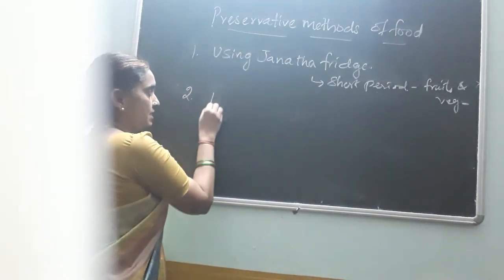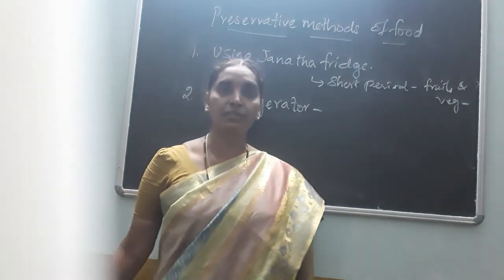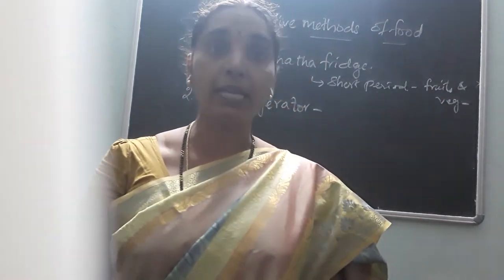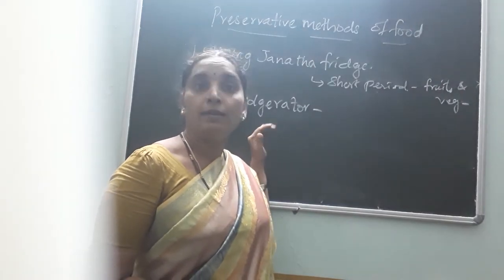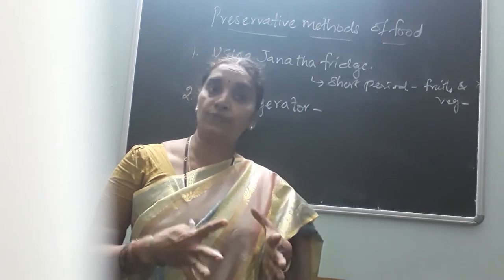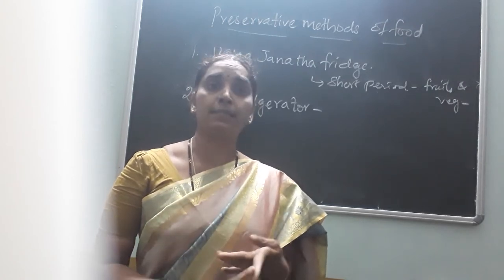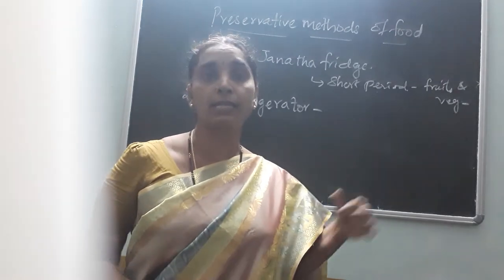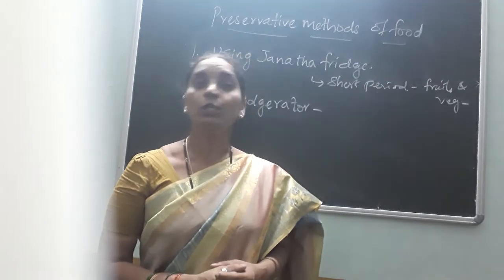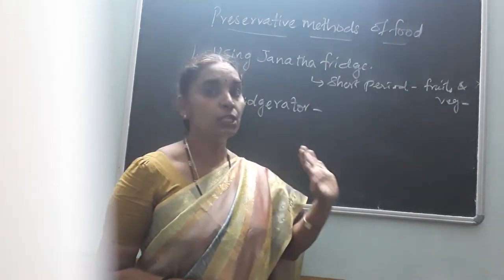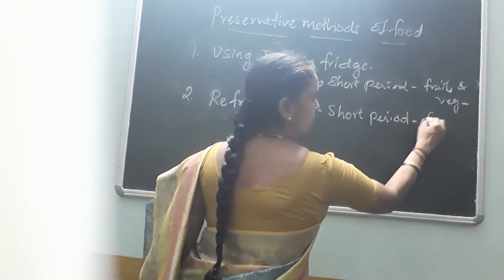Next is refrigeration. You also buy fruits and keep them in your refrigerator. Fridges that you use in everyone's houses — you might have seen it. A refrigerator is an item where you can store food items. Certain food items like cooked food and also raw foods such as fruits, vegetables, milk, curd, batters, meat, and eggs can all be stored inside the fridge. But this is also only for a shorter period. So refrigeration is a preservative technique used for a short period.